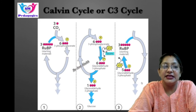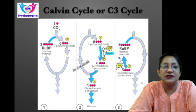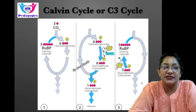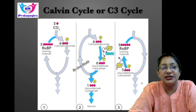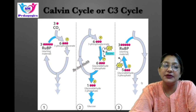The Calvin cycle is most active during the day when NADPH and ATP are abundant. As shown in the slide, the Calvin cycle has three stages: the first is carbon fixation, the second is reduction, and the third is regeneration. We will talk about each of these three steps.